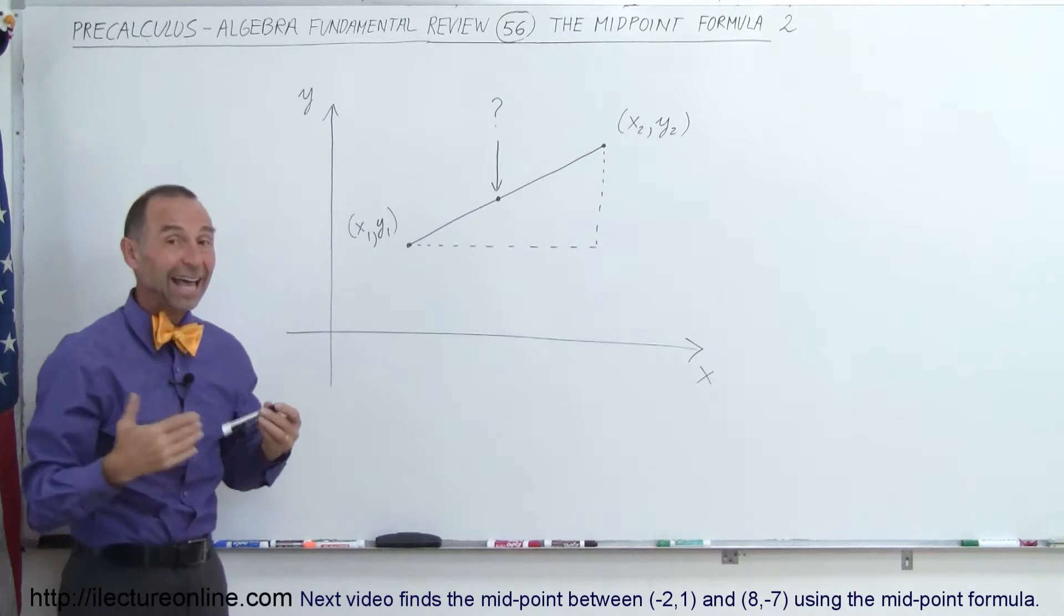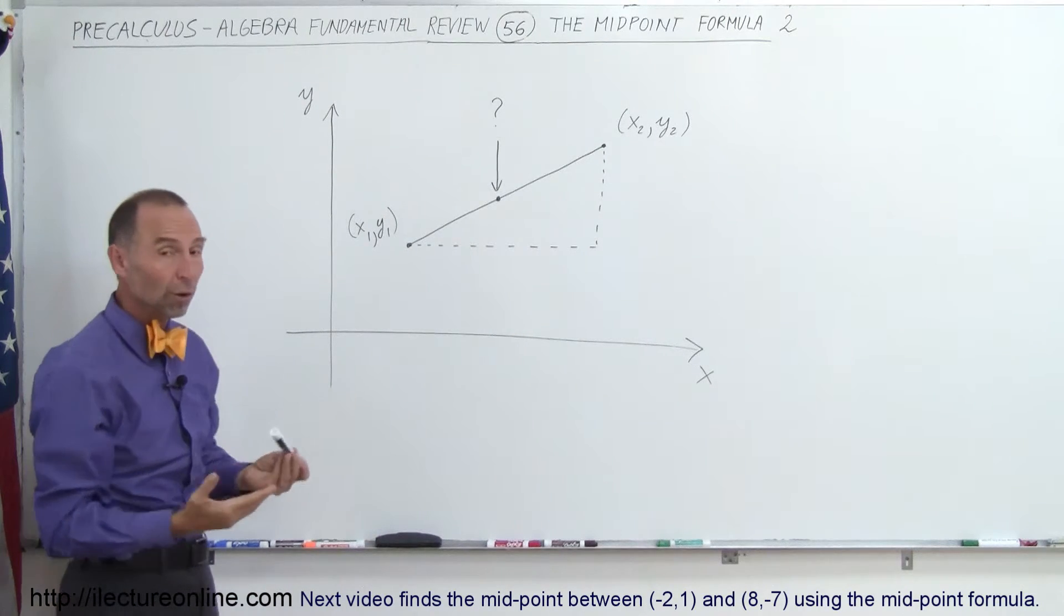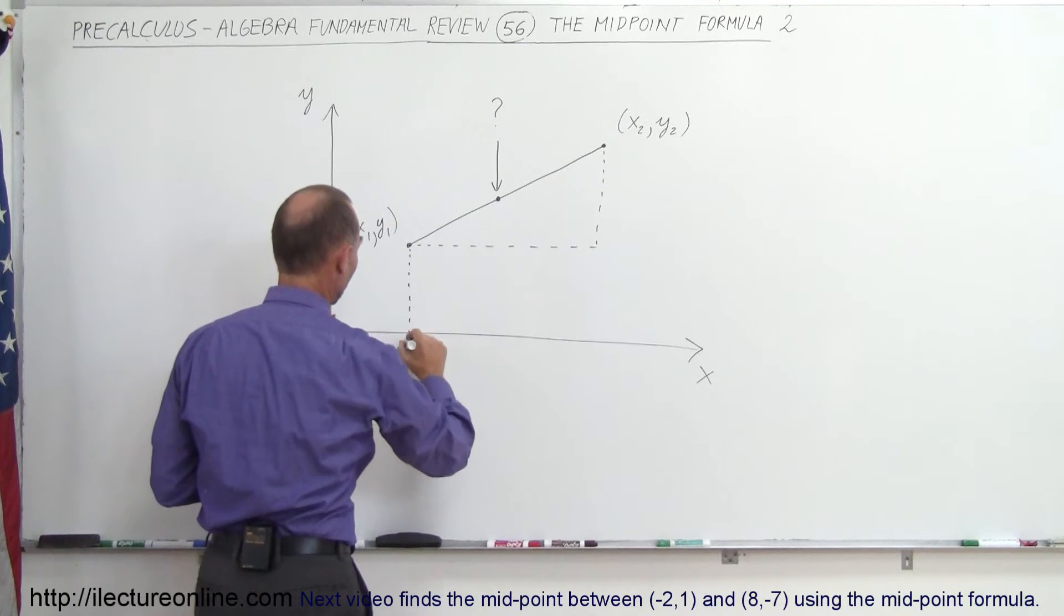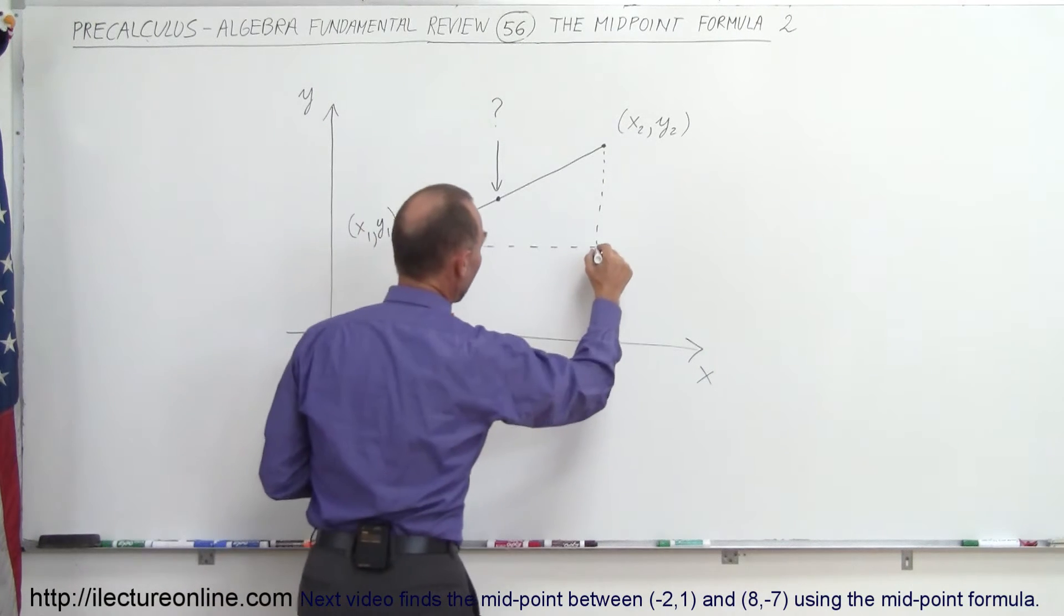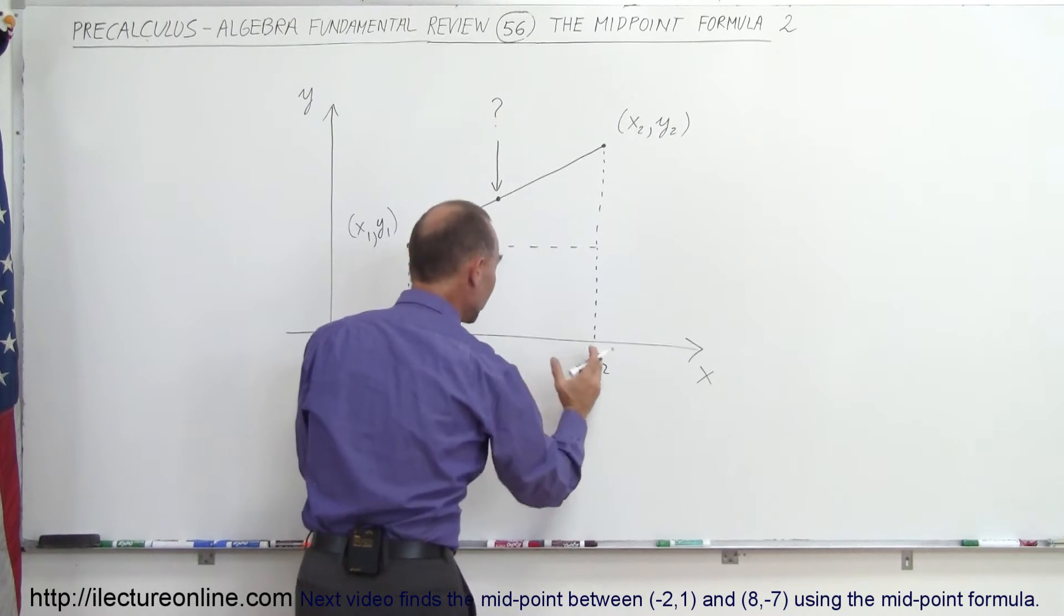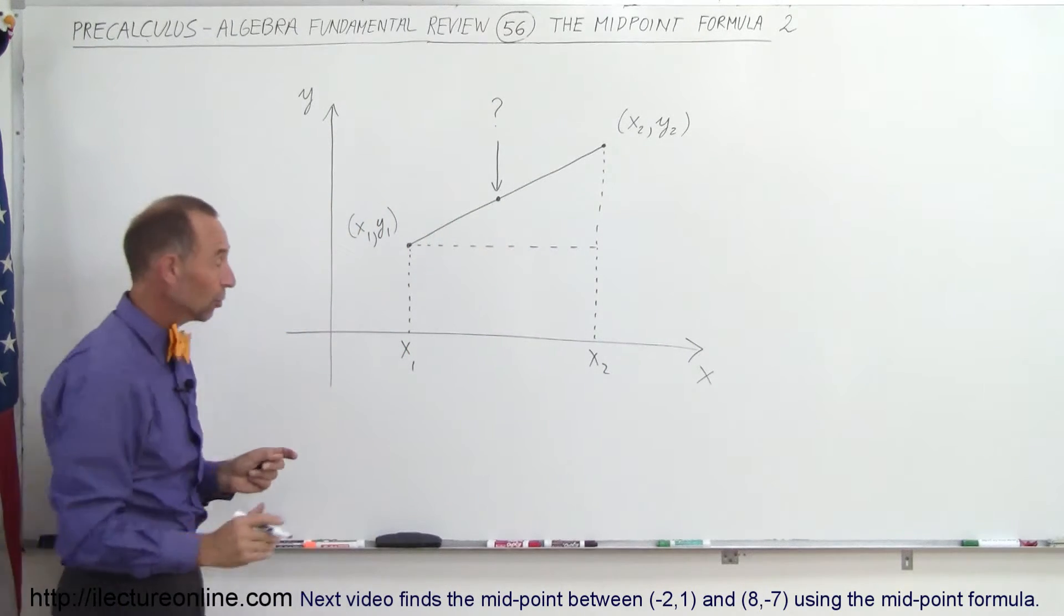And in the previous video, we saw how to find the halfway point between any two points on the X-axis. So let's bring this point down right here. So this is our point X1, and this is our point X2. And so how do we find the middle point between X1 and X2?